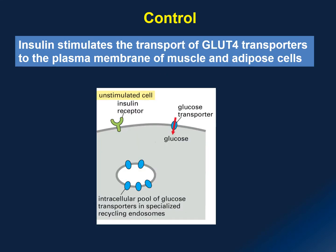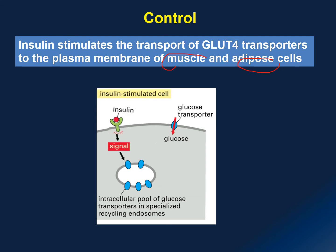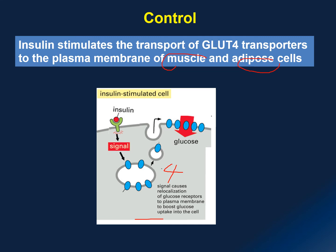If this insulin binds receptors on your fat tissue — the adipocytes — and muscle cells, it triggers a cascade of reactions resulting in the release of glucose transporter number 4 from your endosomes. Normally, you don't have many GLUT4 transporters on the cell membrane of muscle and adipose cells — just enough for the cells to survive.